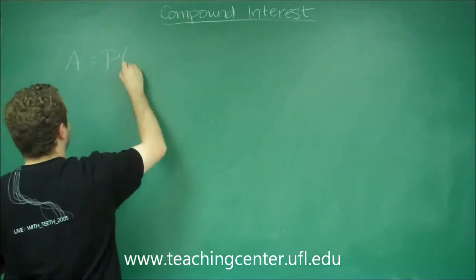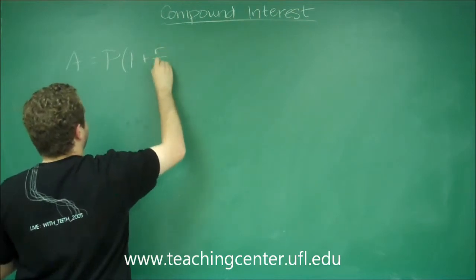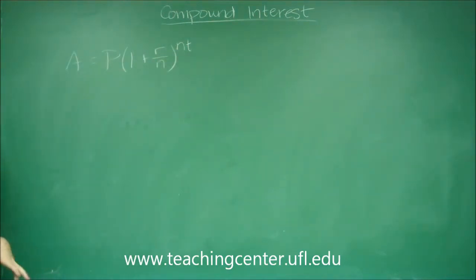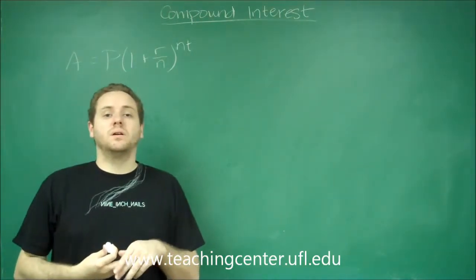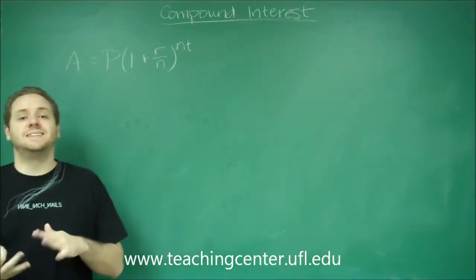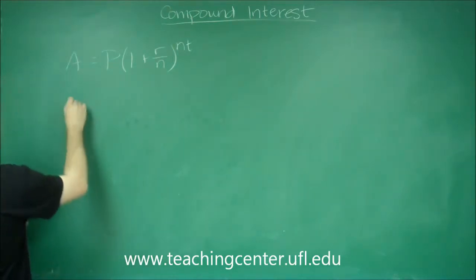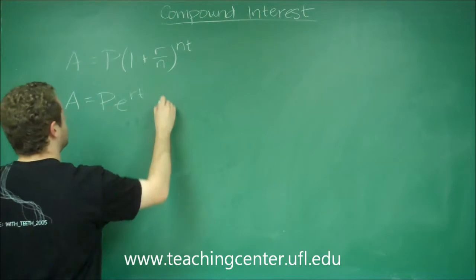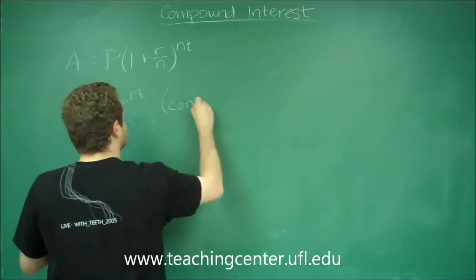A equals P times the quantity 1 plus R over N to the Nt for standard compound interest. And if you want a compound interest that is continuously compounded, you have P times E to the RT. So this is continuously.